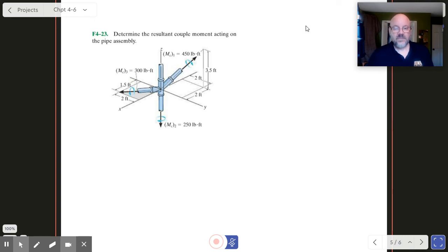Okay, so all we really have to do here is figure out the Cartesian expression for these couple moments. So if I look at M1, it's going to have a magnitude of 450. And then I need to multiply that times a direction thing for it, a unity vector basically.